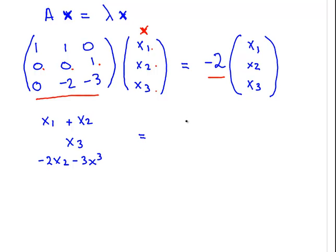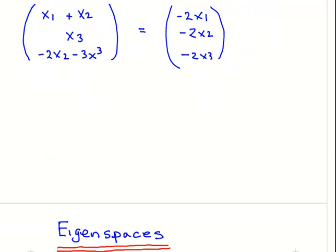That is equal to, let's work on the right hand side now, minus 2x1, minus 2x2 and minus 2x3. What we're going to do is simplify that. Add 2x1 to both sides. So we have 3x1 plus x2, that's equal to 0. That's adding the top row for both matrices.